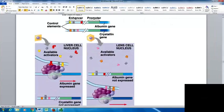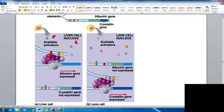Here's an example where you have a crystalline gene in a liver cell nucleus. When certain activators are available, the crystalline gene is not expressed. In the lens, when different activators are available, the crystalline gene can be expressed.